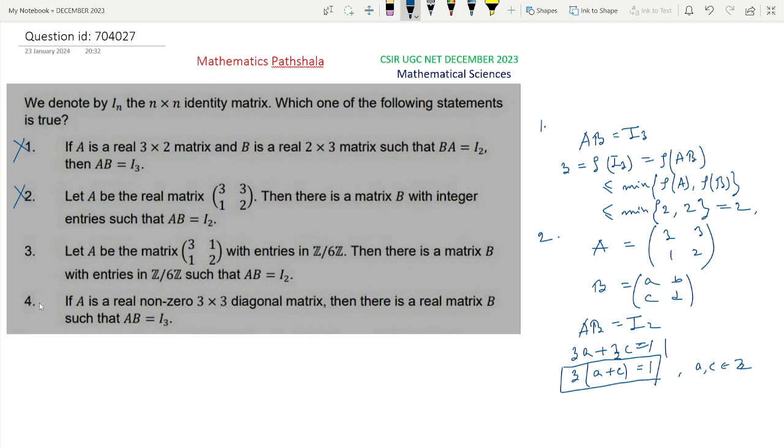Now look at option 4 first because we will show this option also cannot be correct. If A is a real non-zero 3 by 3 diagonal matrix, then there is a real matrix B such that AB equals I3. Just take A equals diag(1, 2, 0). If option 4 were true, it would be true for any 3 by 3 non-zero real diagonal matrix.